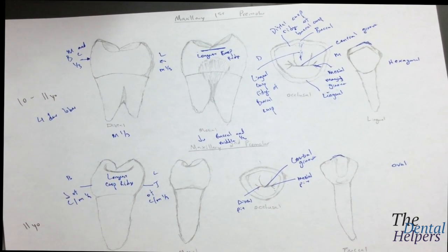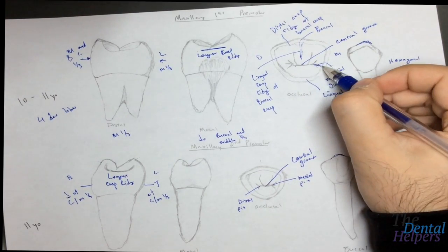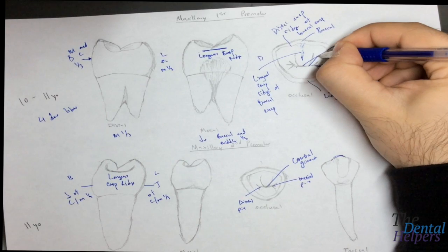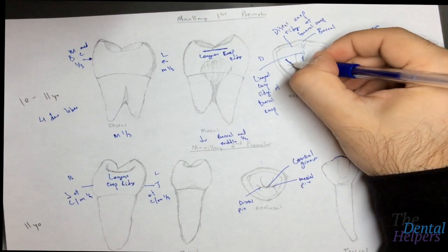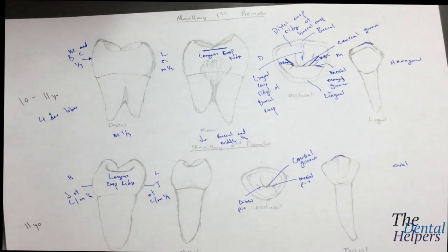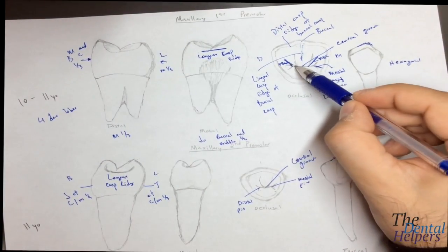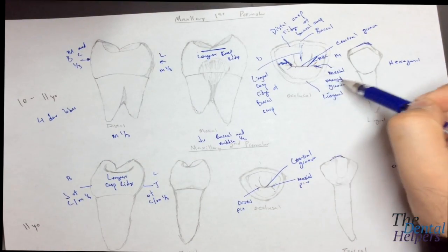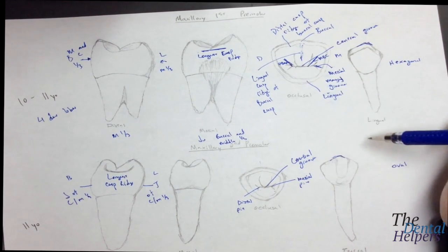A typical thing you're not going to see in maxillary teeth is a distal tilt — remember that mandibular teeth typically have a distal tilt. As for grooves on the maxillary first premolar, there are five: the central groove, mesial marginal ridge groove, mesial buccal groove, and distal buccal groove. The one students typically forget is the mesial marginal ridge groove.